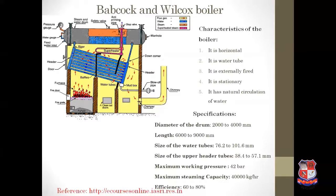A safety valve — either a dead weight safety valve or a lever-loaded safety valve — releases pressure when the steam pressure level is above a certain level. A stop valve supplies the generated steam to the necessary place, such as a steam turbine. A superheater is also provided to superheat the steam, and this superheated steam is supplied to the steam turbine. The superheater takes heat from the hot gases.